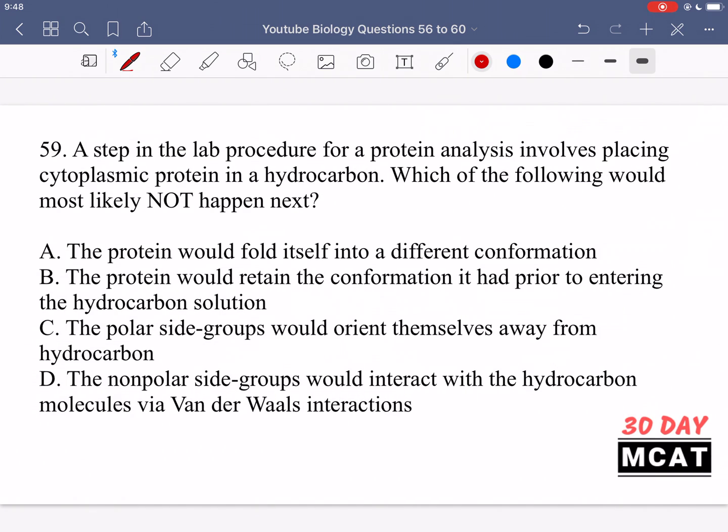In question 59, a step in the lab procedure for protein analysis involves placing cytoplasmic protein in a hydrocarbon. We're talking about a hydrocarbon-type solvent. Which of the following would most likely not happen next? We took a cytoplasmic protein and put it into a hydrophobic environment - what would not happen? Some of these things are going to happen, one is not. What happens for a protein in the cytoplasm is it's surrounded by an aqueous environment, so polar side chains come to the outside when the protein folds and interact with the environment.